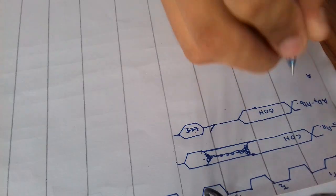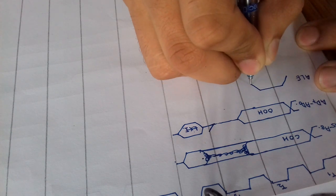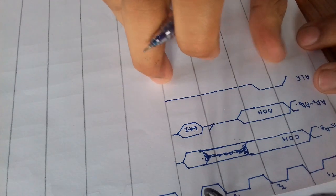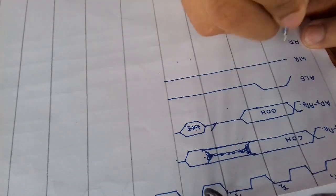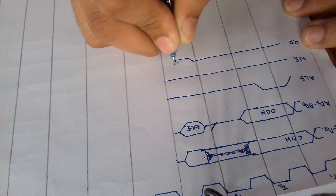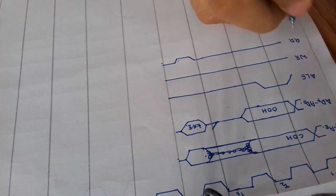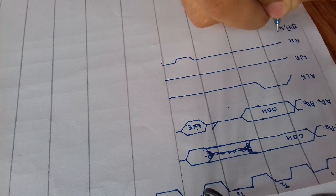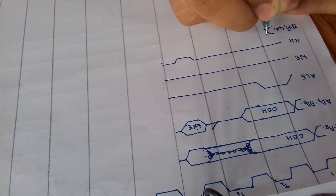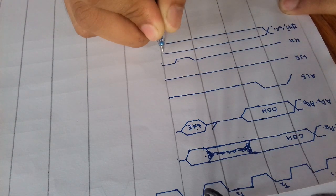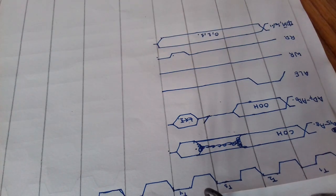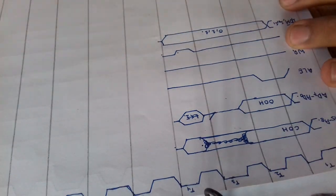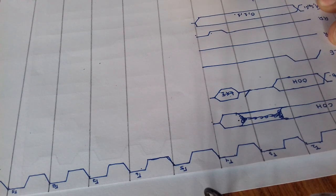The ALE gets initiated in the initial phase of the cycle. We are drawing the operation code fetch cycle. We have no write signal until this point — the read is only active in this section. This operation code fetch cycle is similar for every instruction cycle.